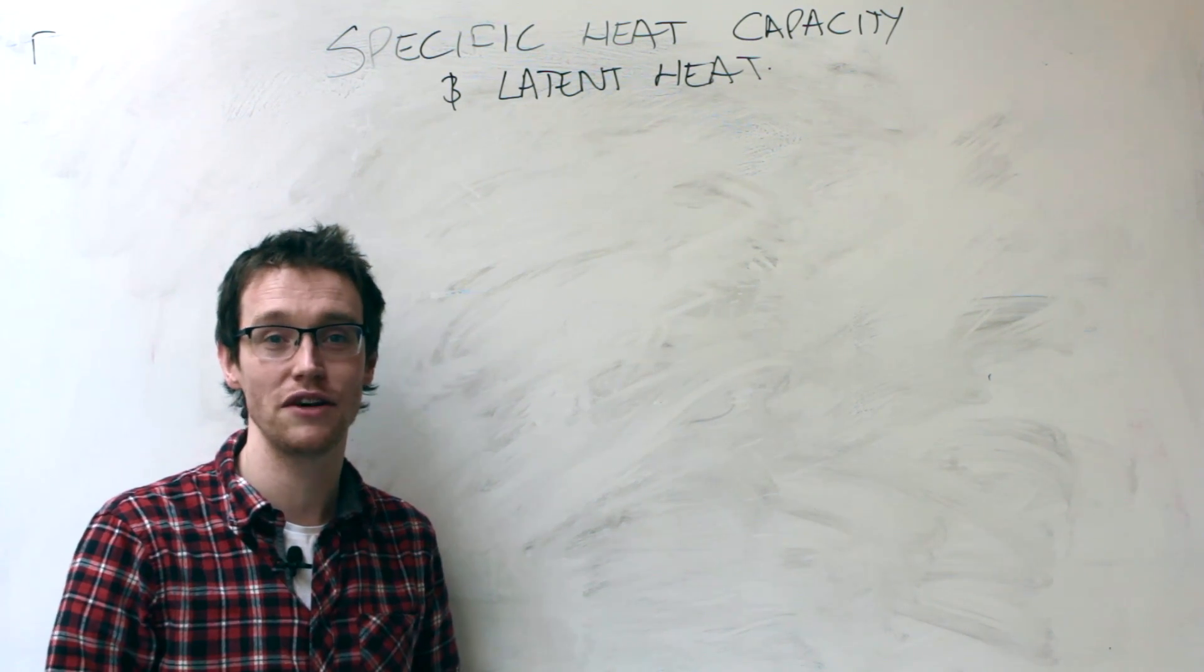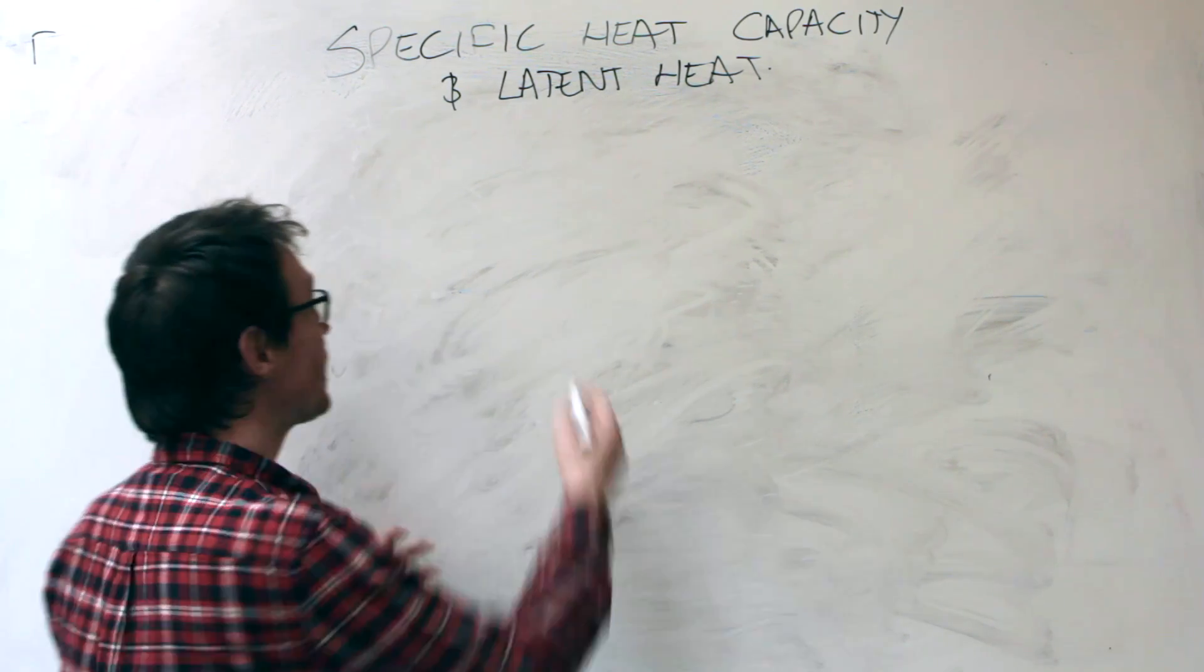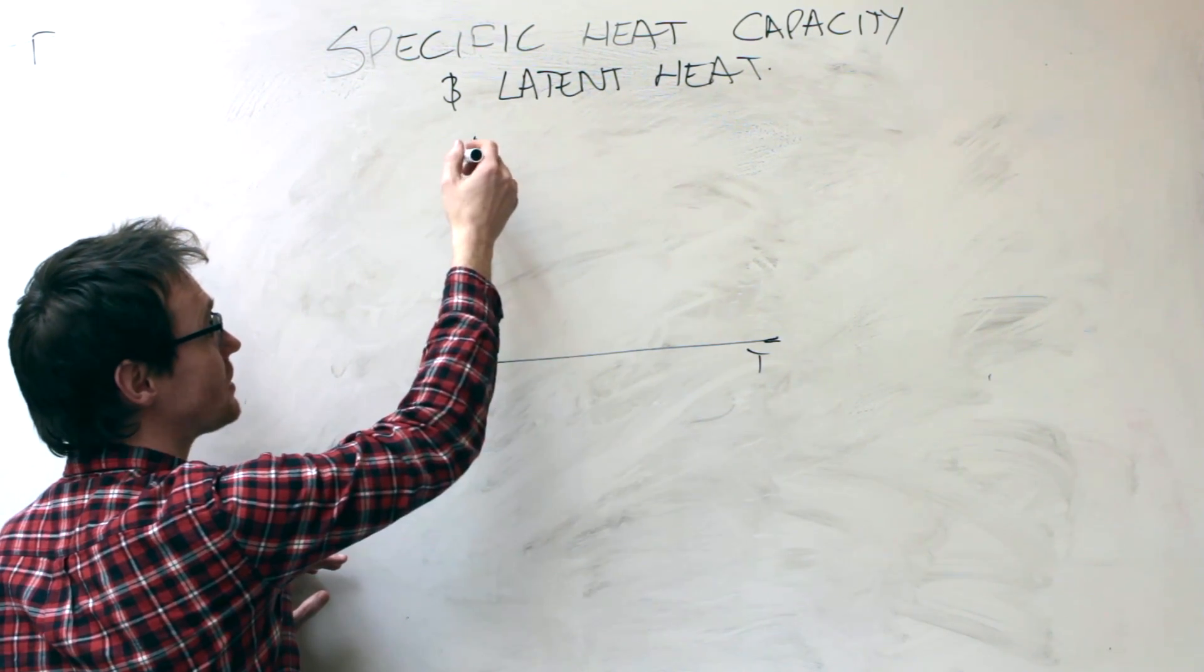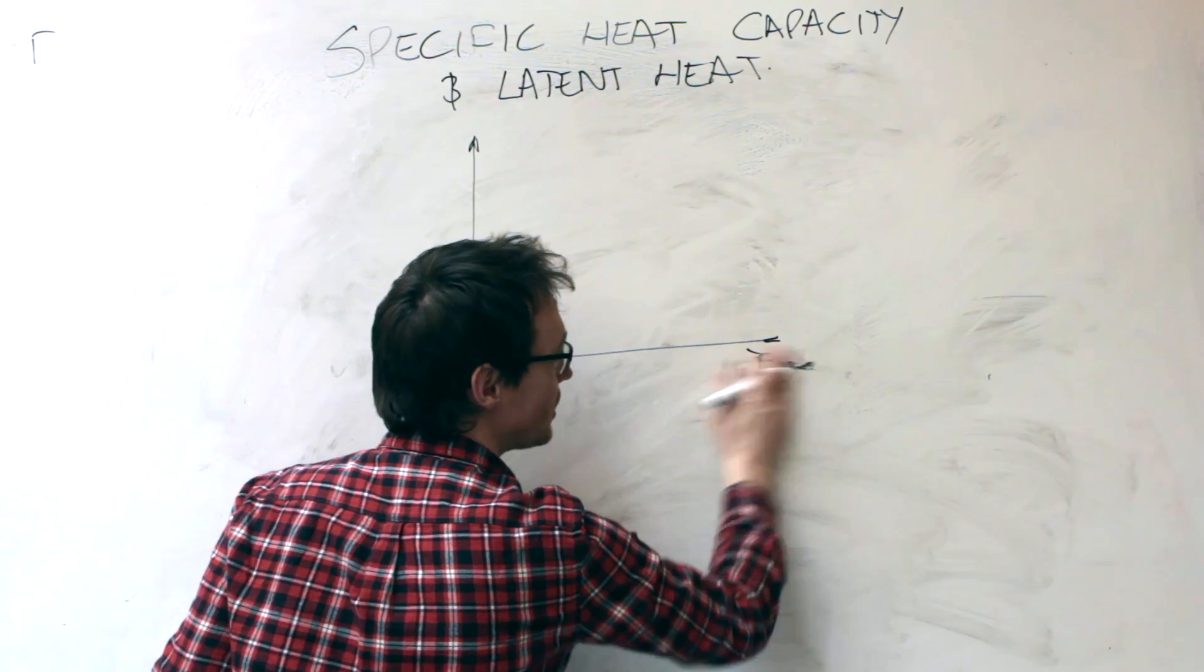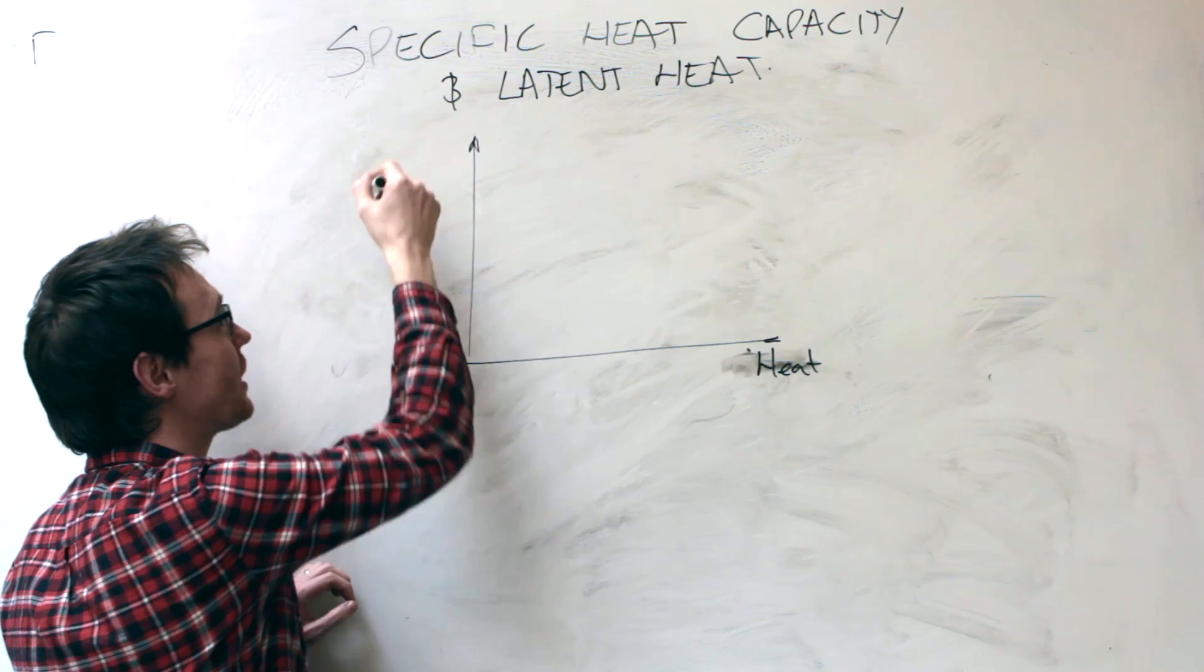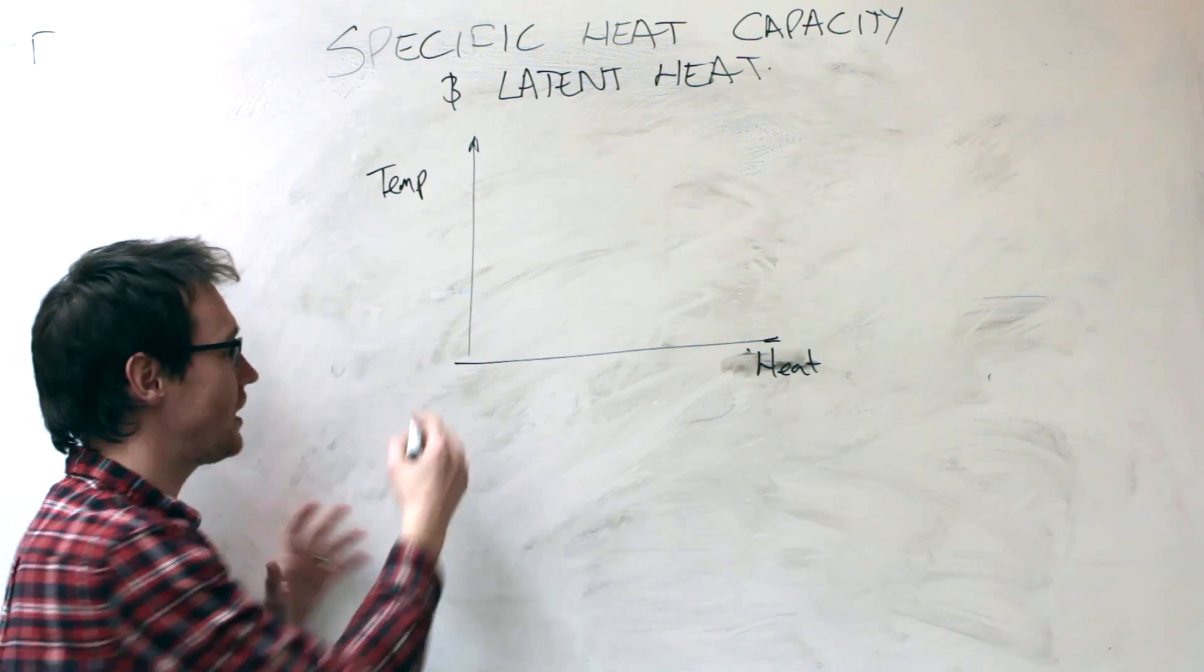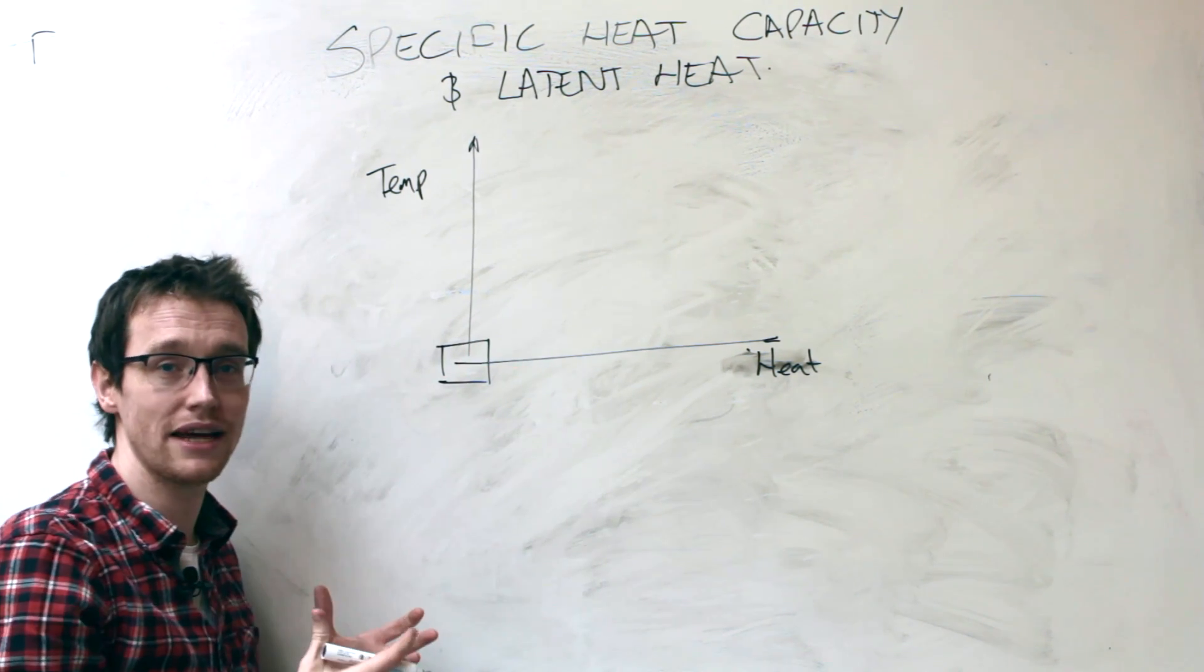But for SI units, degrees Kelvin is the one. So let's just take an example here. If I had time going along the x-axis and temperature going along the y-axis, what I'd expect to see if I had a block of ice is that as I added more heat energy - so we're going to think of heat energy in this example by adding candles.